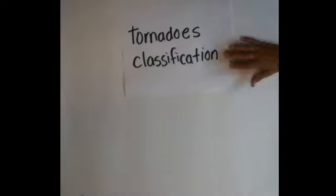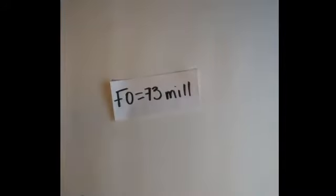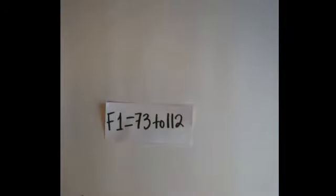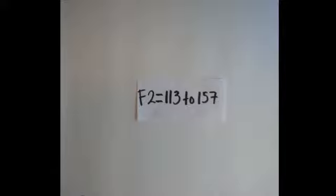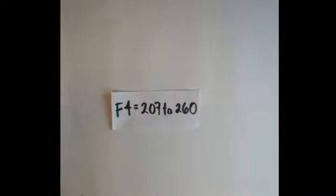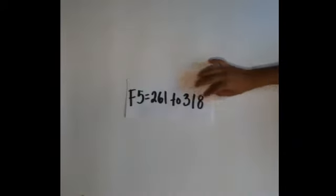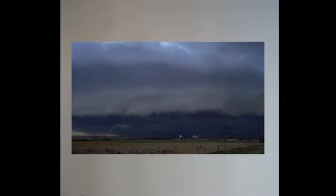How fast tornadoes go depends on what classification the tornado is given. The F0 goes up to 73 miles per hour. The F1 goes 73 to 112 miles per hour. The F2 goes 113 to 157 miles per hour. The F3 goes 158 to 206 miles per hour. The F4 goes 207 to 260 miles per hour. The F5 tornadoes are the worst recorded tornadoes and don't happen very often.